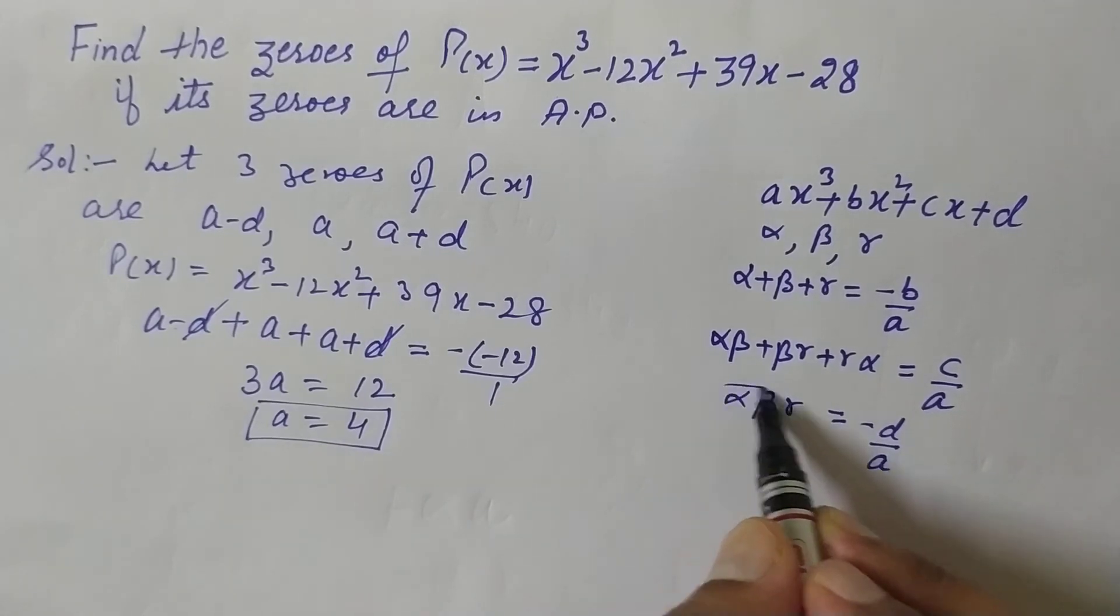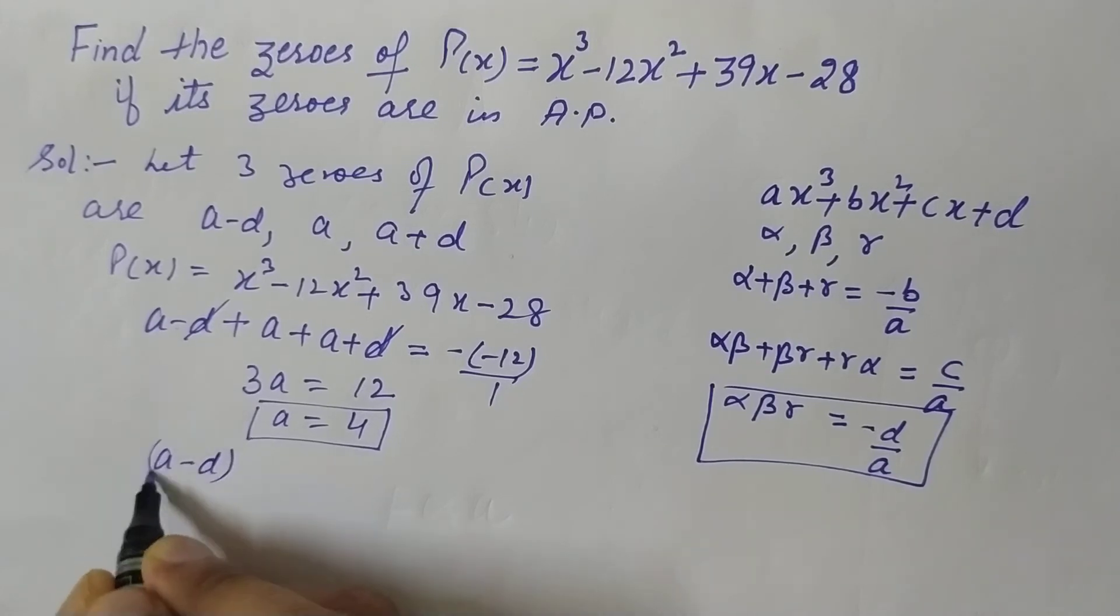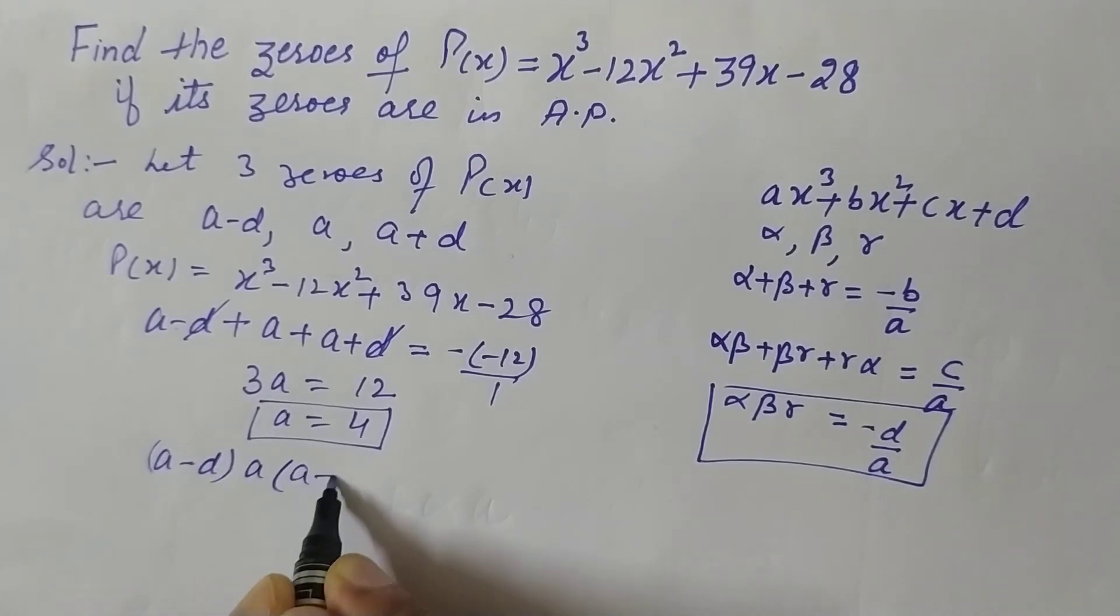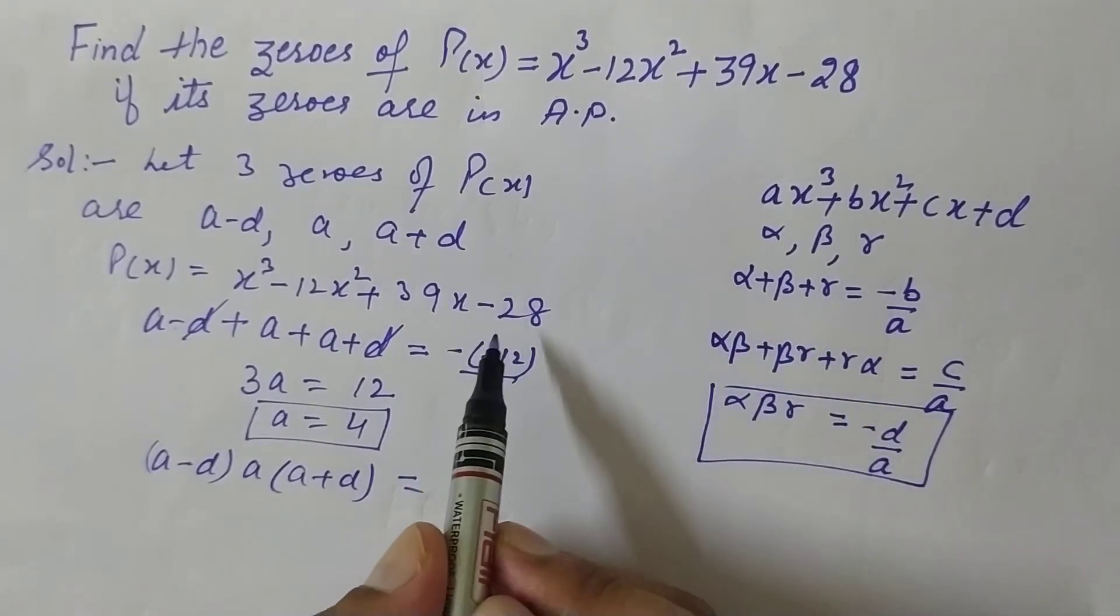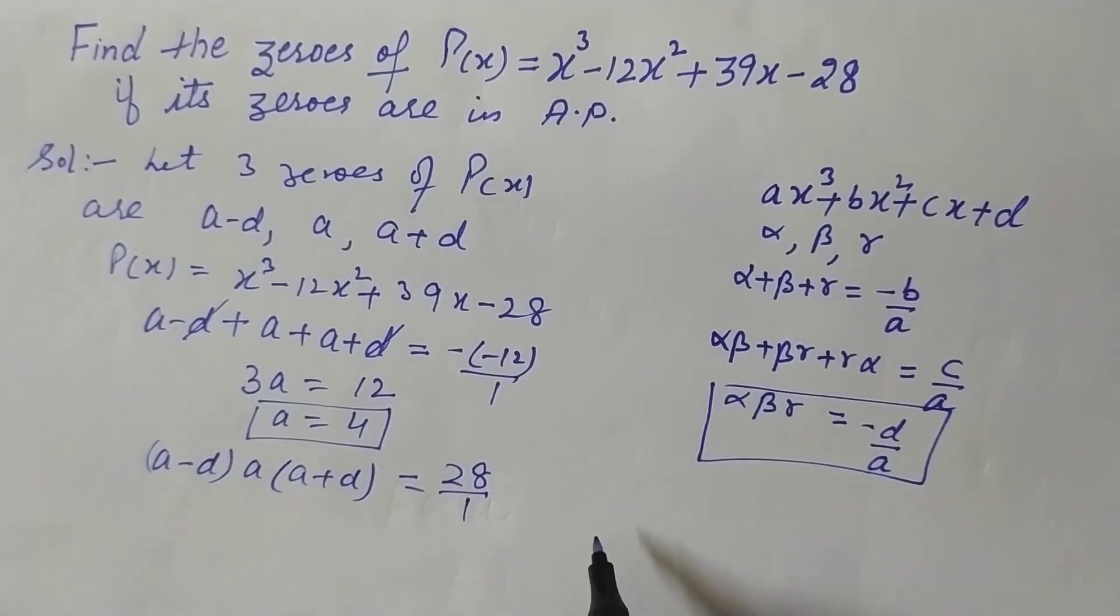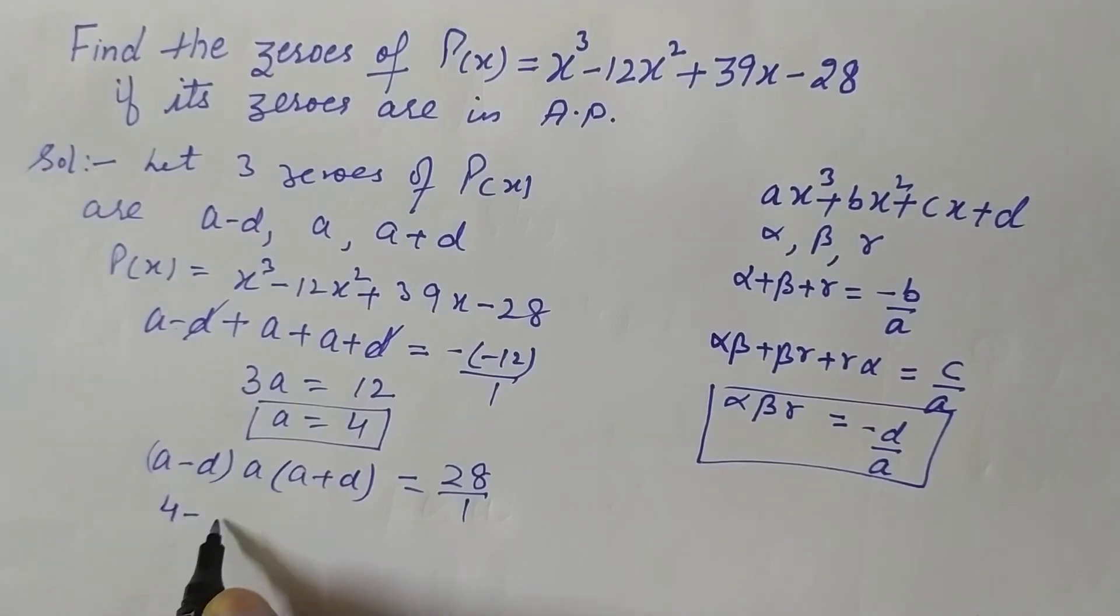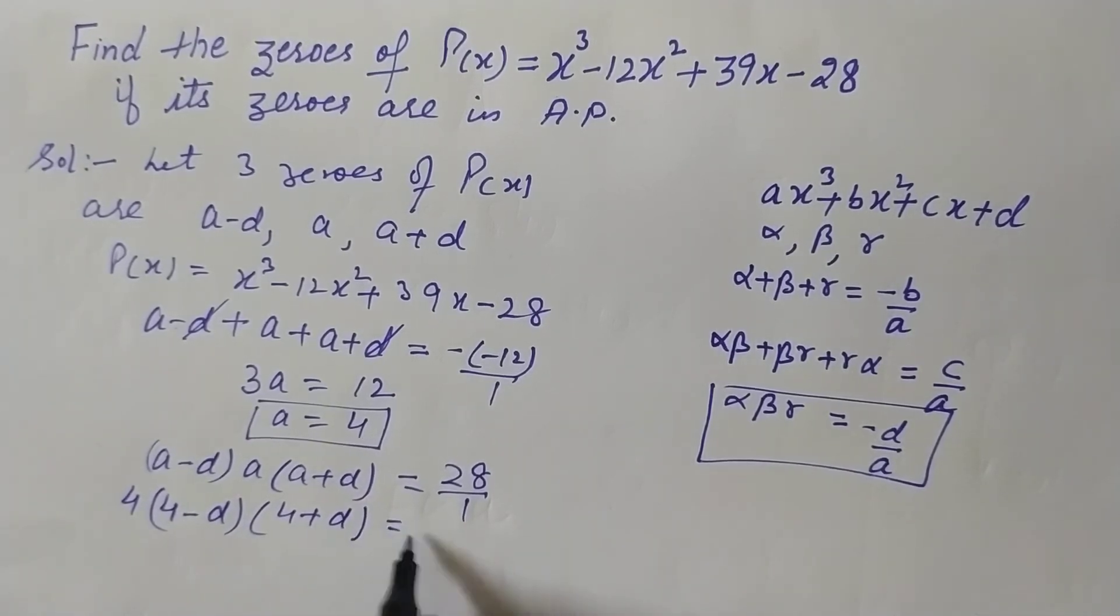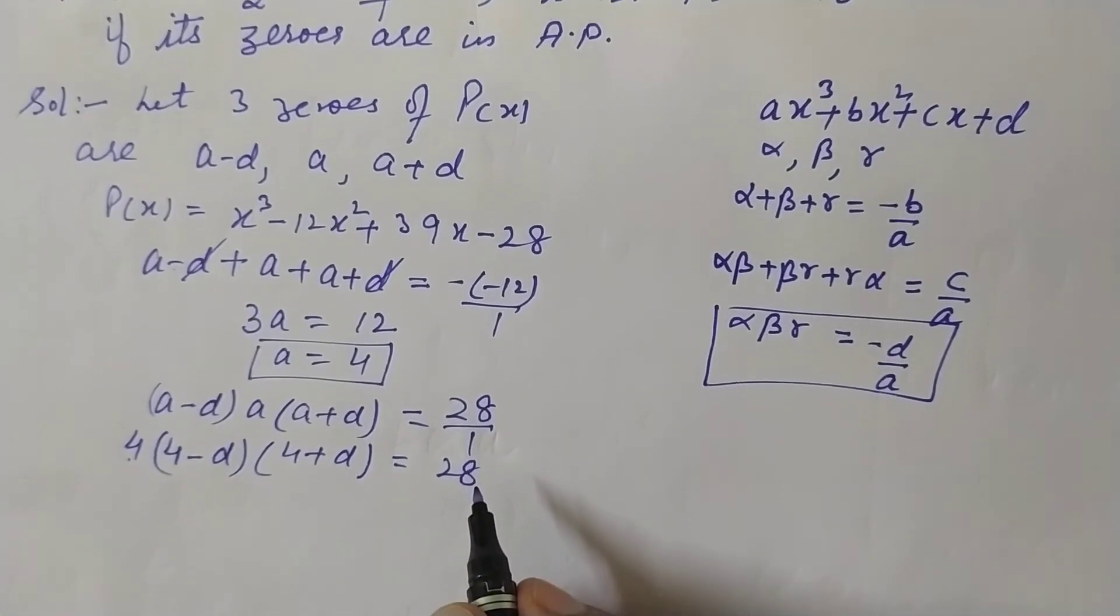Now we will use the product of three zeros formula. The product of these three zeros: first zero times second zero times third zero is given to us as -d/a. What is -d here? This is -(-28) = 28 over a is 1. Put the value of a as 4 here. So it becomes (4-d) × 4 × (4+d). This 4 will go down in the denominator. Here you can apply the formula (a-b)(a+b) = a² - b².